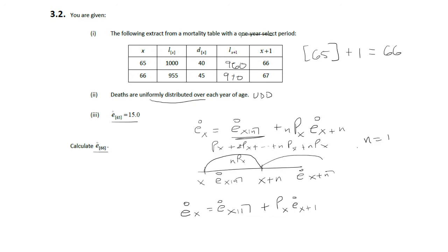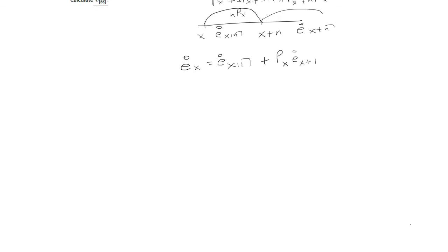Now I want to simplify this part right here. Because this is UDD, well one of the formulas you should know is X angle N is NPX, so surviving N years times N over 2.